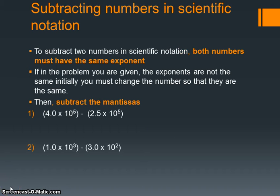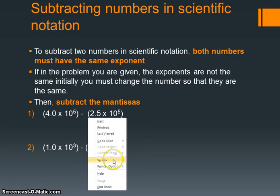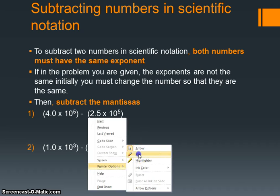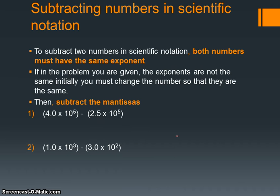If we need to subtract numbers in scientific notation, both numbers must have the same exponent. If the exponents are not the same initially, you need to do work to make it happen, then you simply subtract the mantissas. We've got two examples here.